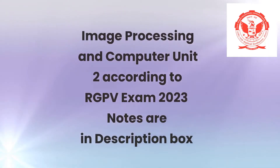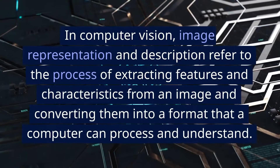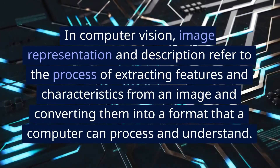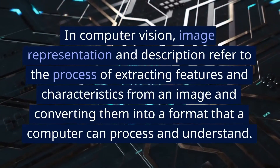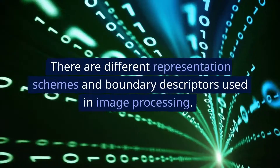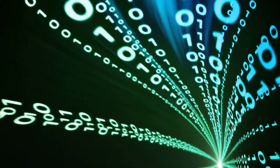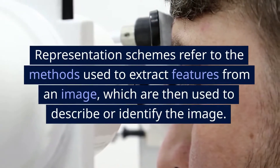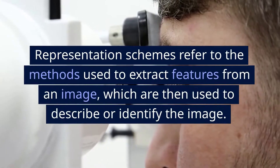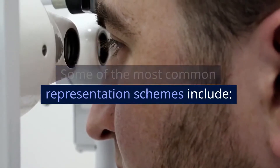Image processing and computer vision, Unit 2, according to RGPV exam 2023 notes. What are image representation and description? In computer vision, image representation and description refer to the process of extracting features and characteristics from an image and converting them into a format that a computer can process and understand. There are different representation schemes and boundary descriptors used in image processing. Representation schemes refer to the methods used to extract features from an image, which are then used to describe or identify the image.